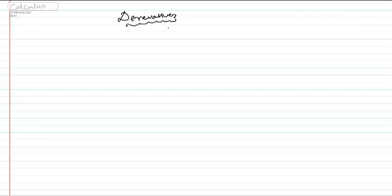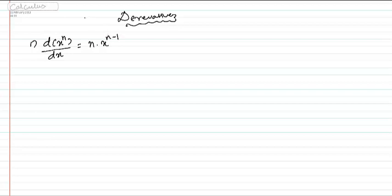Friends, welcoming you to the session on derivatives. This session will be basically useful for students who are pursuing professional courses like CA, CWC, CS. We will start with some useful derivatives. Number 1: differentiation of x power n is equal to n into x to the power of n minus 1. We are not getting into how this derivation was made, but we will make use of this derivative rule and we will proceed with the problems.